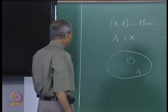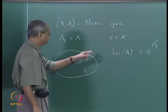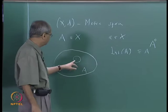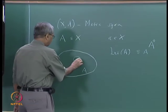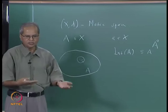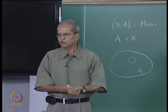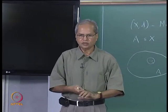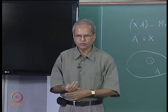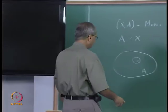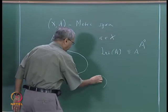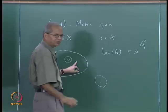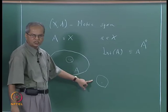Now what is the other possibility? Suppose you take any point a in X. One possibility is that there exists some R such that the ball with center at a and radius R is completely inside A. The other possibility is that there exists some R such that the ball with center at a and radius R is completely outside A. Such a point is called an exterior point.